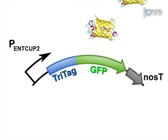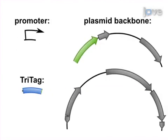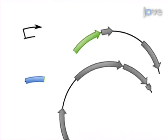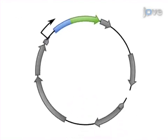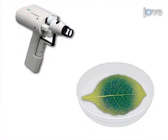The construct is then built using PCR amplification and Gibson assembly. Next, a gene gun is used to deliver the construct to tobacco leaf epidermal cells.